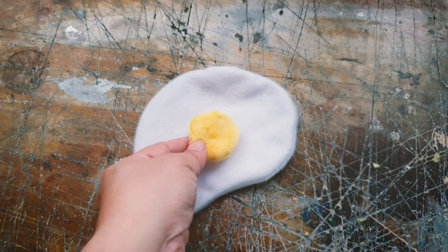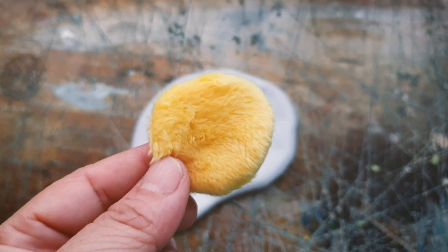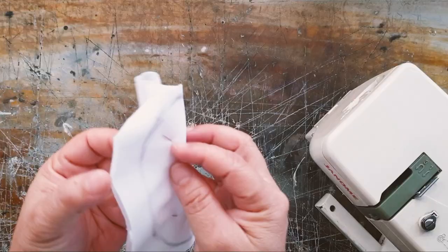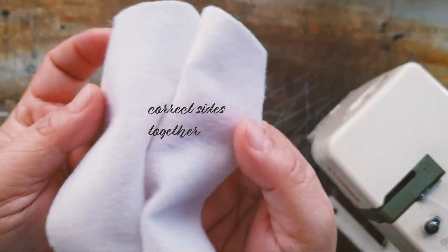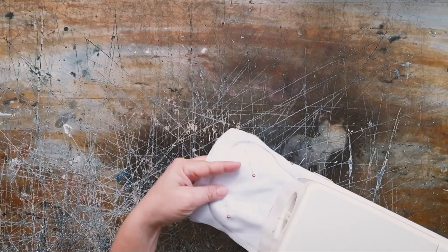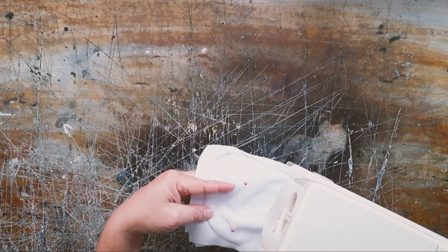Let's start with the fried egg. You can use any white fabric for the egg whites, like a white t-shirt or white towels. We'll draw an egg white shape on the back side of the fabric and pin them together.